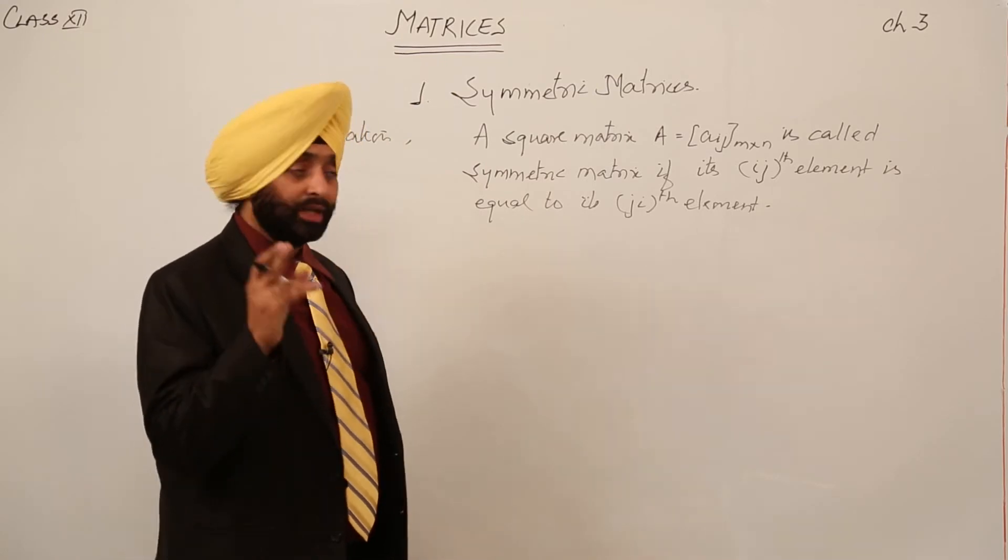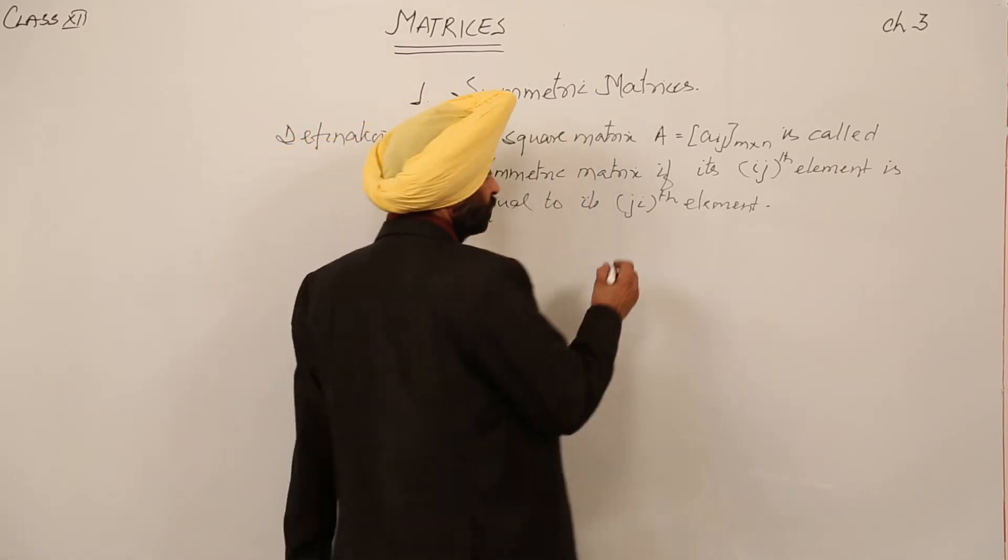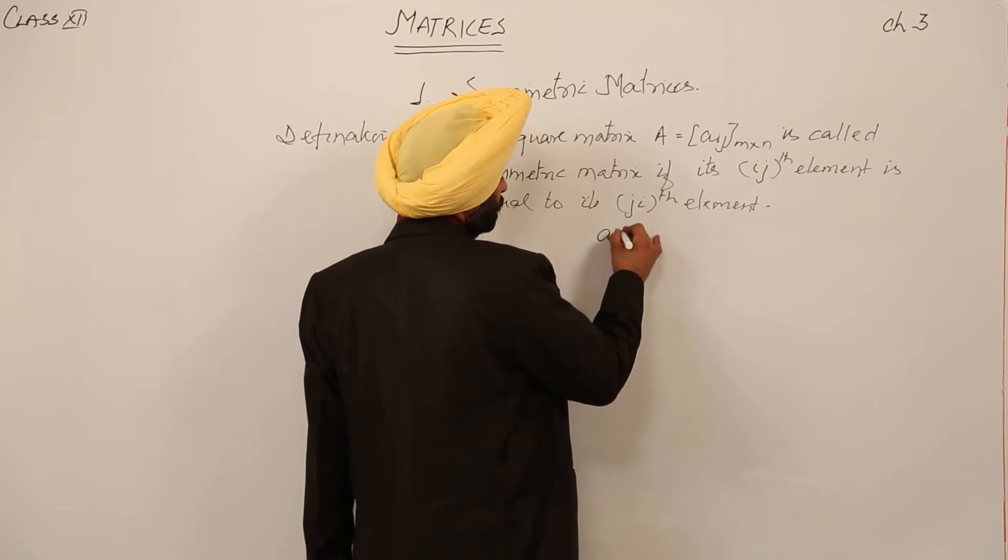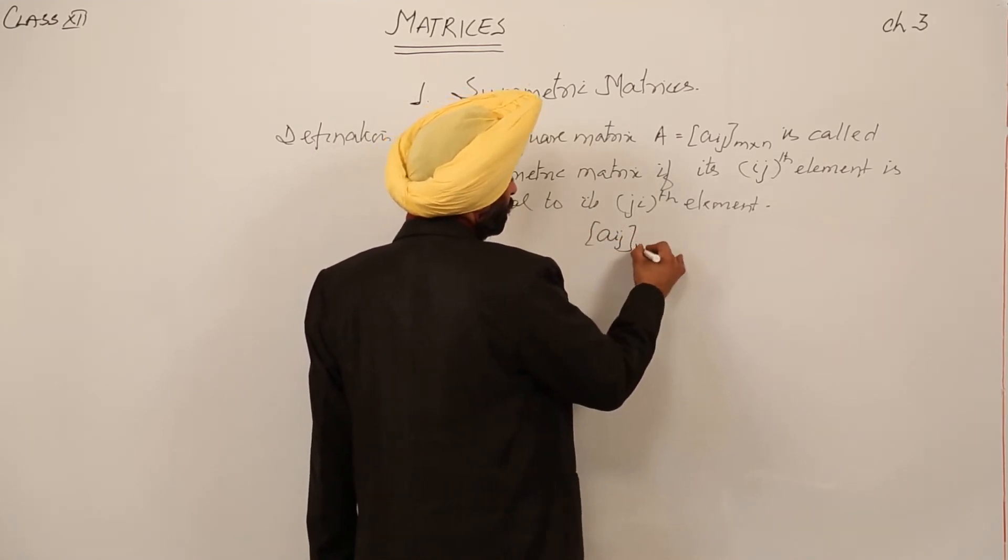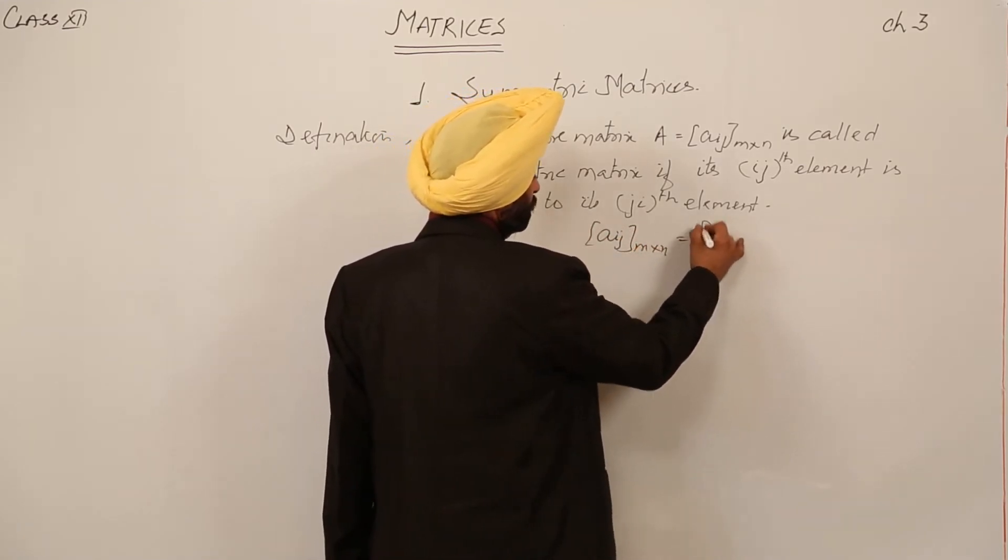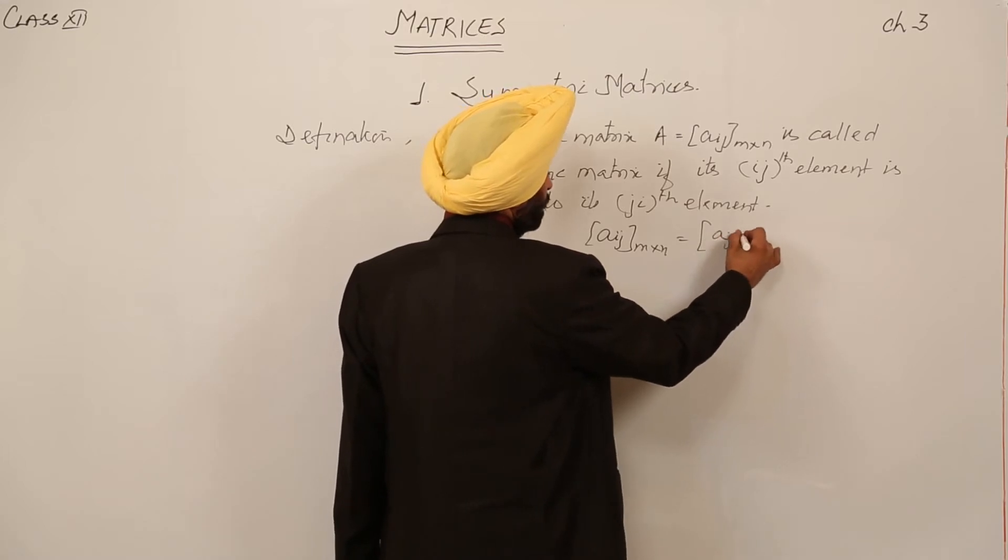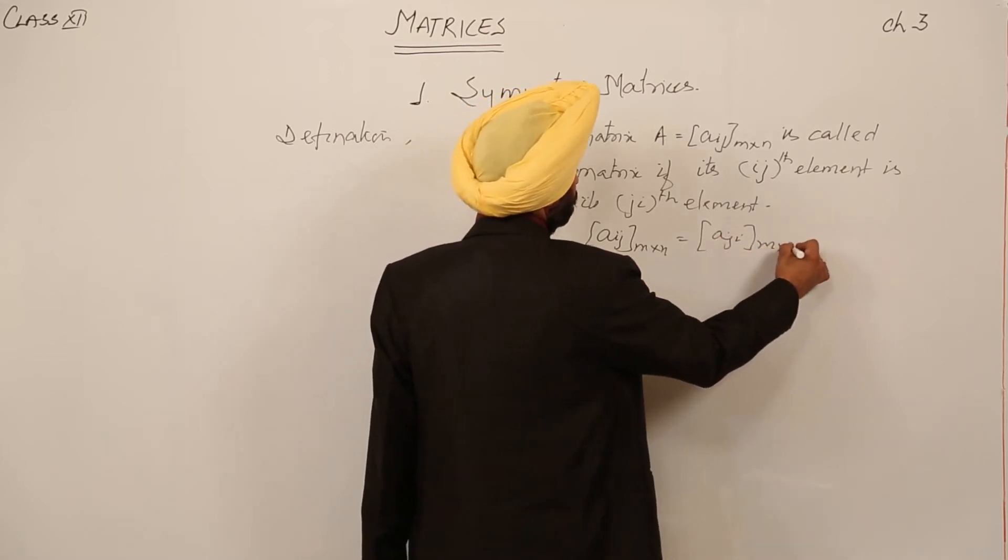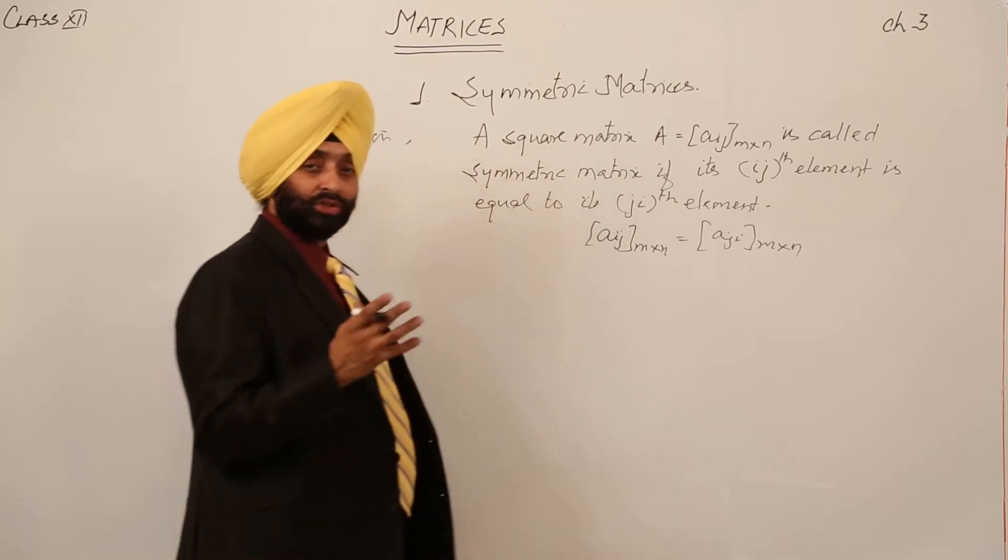It means what? This element is equal to A_ji element. Let me tell you. A_ij m by n is equal to A_ji m by n. This is the first condition.